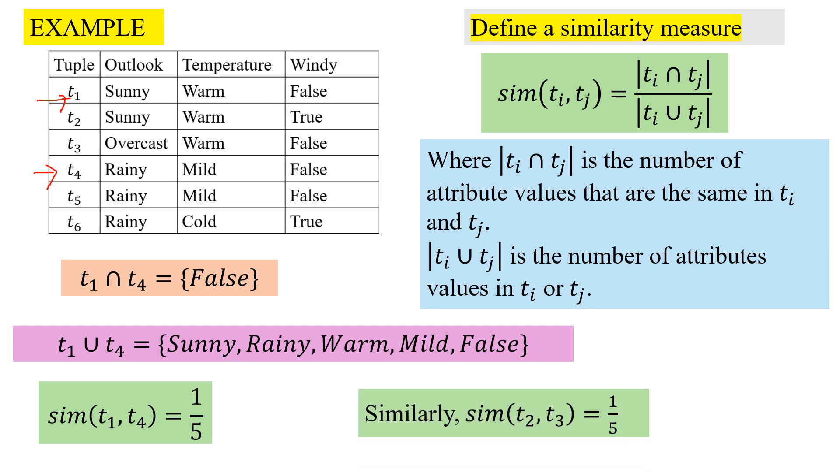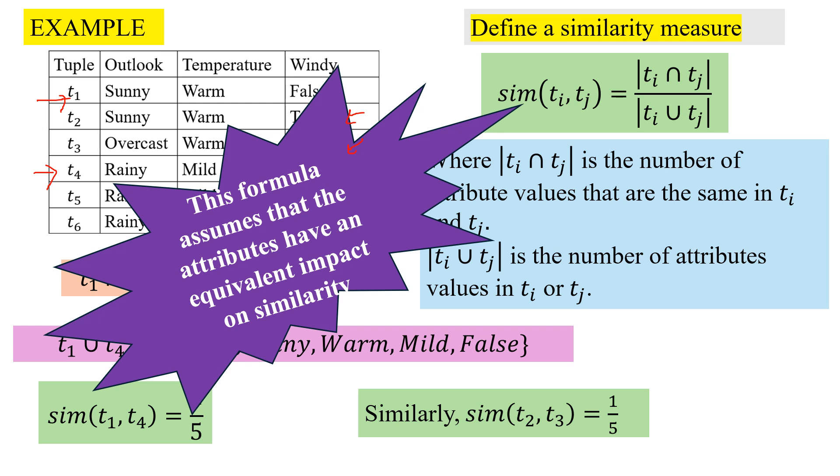For t2, t3, similarity is also 1 by 5 because the common is 1 attribute, which is the warm value for the temperature attribute. This formula assumes that all attributes have equivalent impact on similarity, which should not be the case.